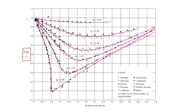This is the law of corresponding states. These gases coincide — their properties are the same when plotted at the same reduced pressure and reduced temperature. The compressibility factor will be the same.